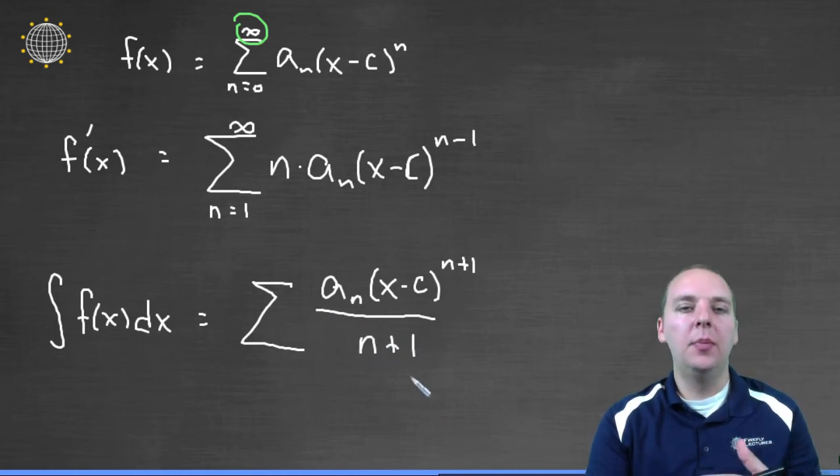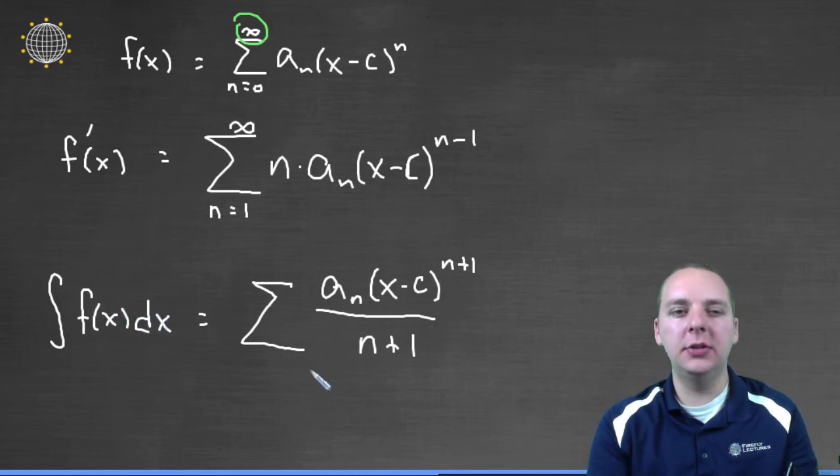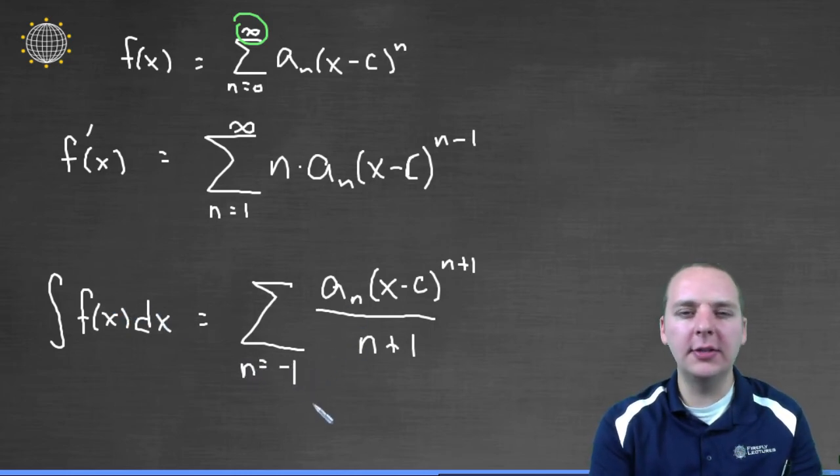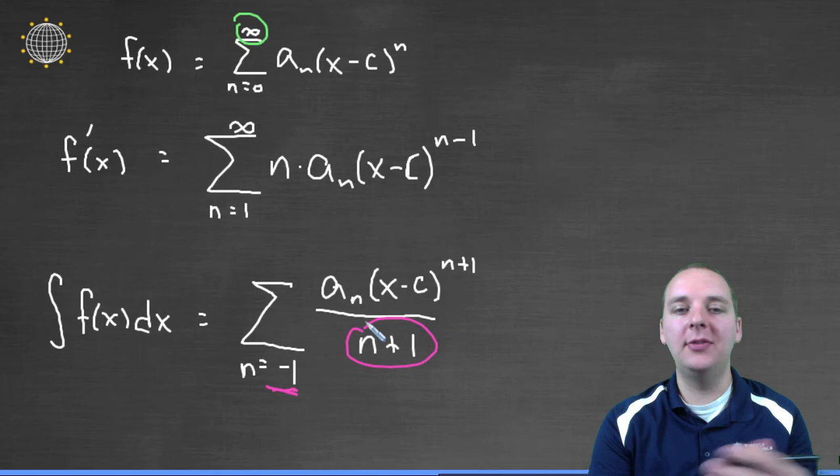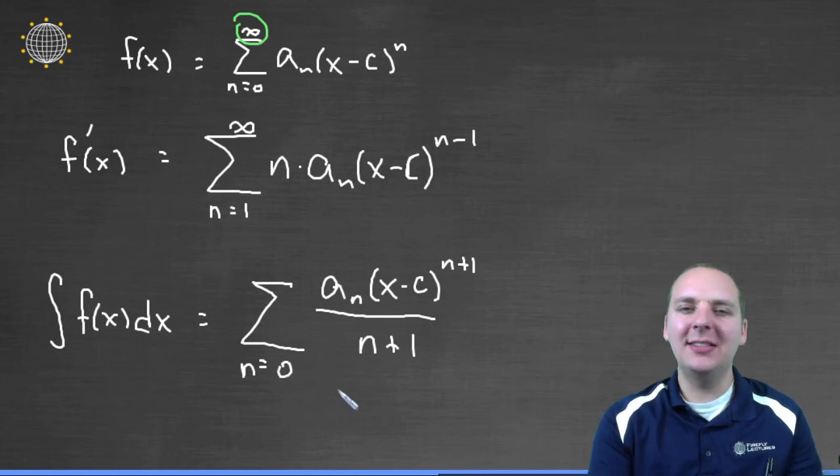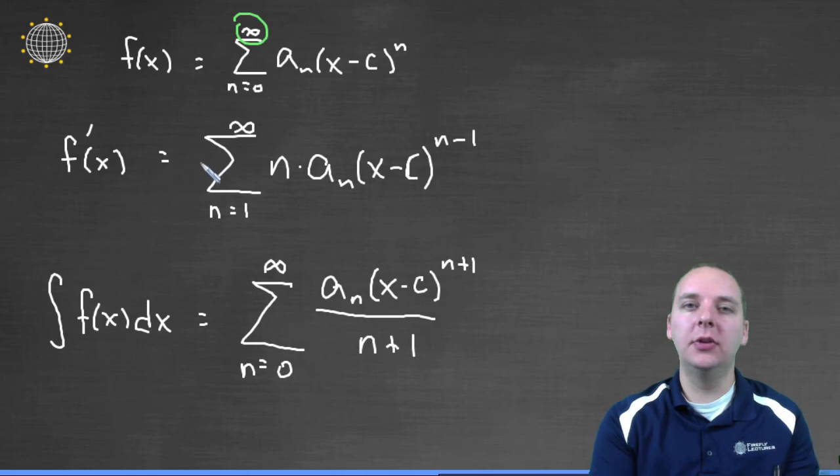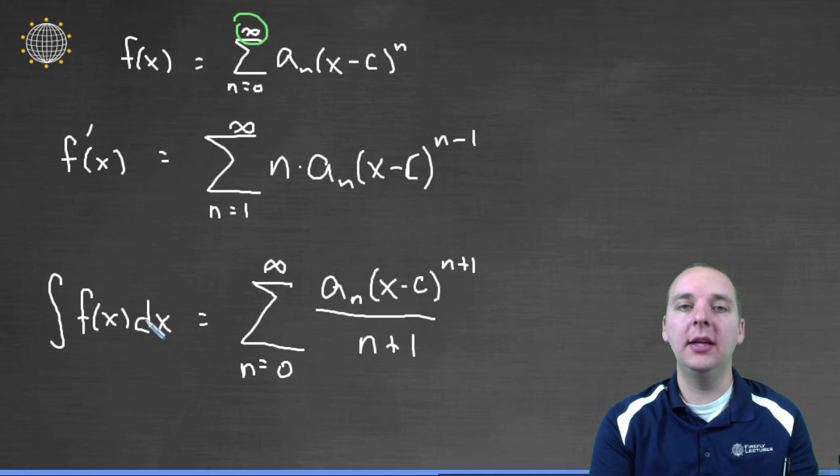Now what about the index for this guy? For the derivative we increased it by one. For the integral should we decrease it by one, should we start this guy at negative one or something like that? No, I think that's a bad idea because if we started it at negative one, your first term would have division by zero. So we actually don't start it at negative one, we actually keep it at zero. But then that doesn't sound very fair, why did we adjust the index for the derivative but not for the integral? Well we actually do get an additional term with the integral.